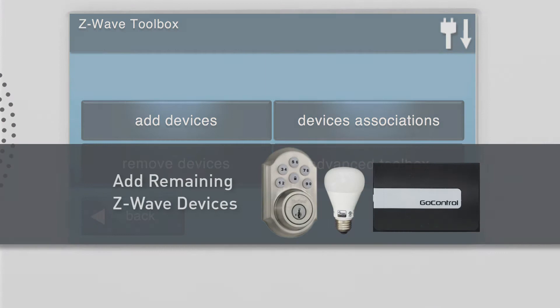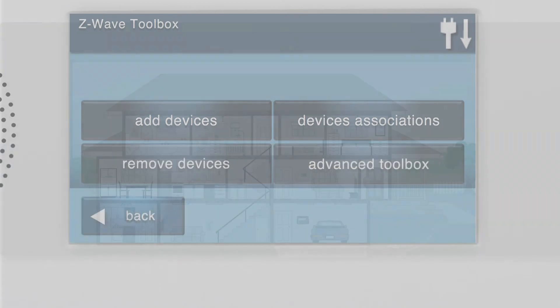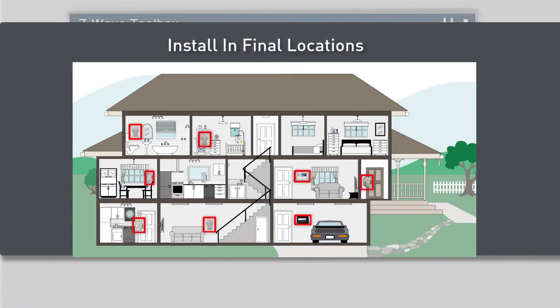If you have any additional Z-Wave devices, add them to the panel by repeating the steps discussed in this video. Then install the panel and all Z-Wave devices into their final locations.